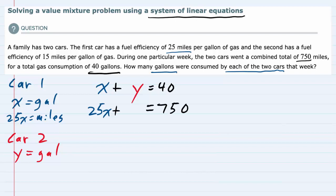The second car gets 15 miles per gallon. Again, one gallon of gas would get you 15 miles. Two gallons would get 30 miles. Three gallons, 45 miles, and so on. So it's multiplication.